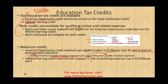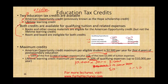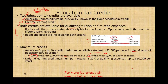For the Lifetime Learning Credit, the maximum per year is 20% of qualifying expenses up to $10,000, so the maximum credit is $2,000. If you spend $30,000 on education, you can only take $10,000 times 20%. If you spend $5,000, that's $5,000 times 20% equal to $1,000. The maximum credit you will get for the Lifetime Learning Credit is $2,000. There are phase-outs, which we'll talk about in a moment.